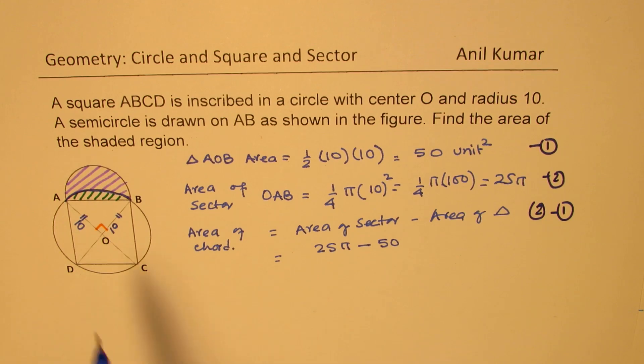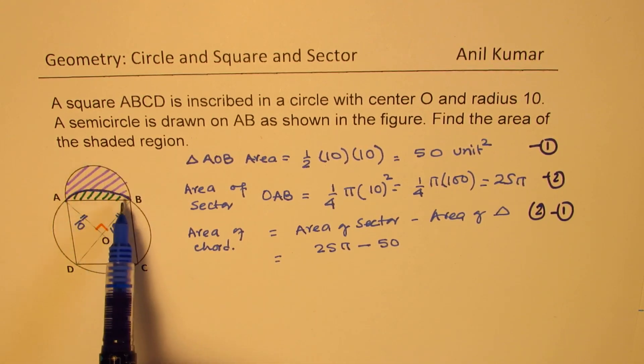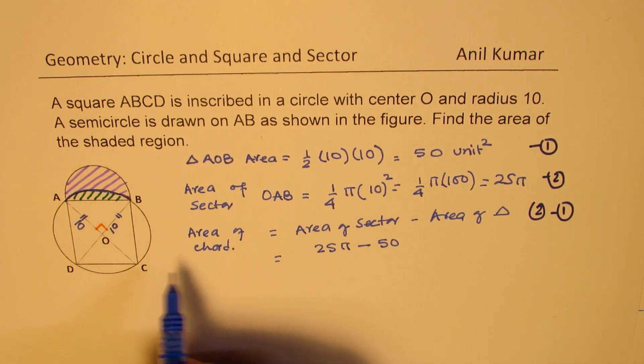Now, we need to find area of the semicircle. To find area of the semicircle, we need to find the diameter AB. So let's find the length AB.